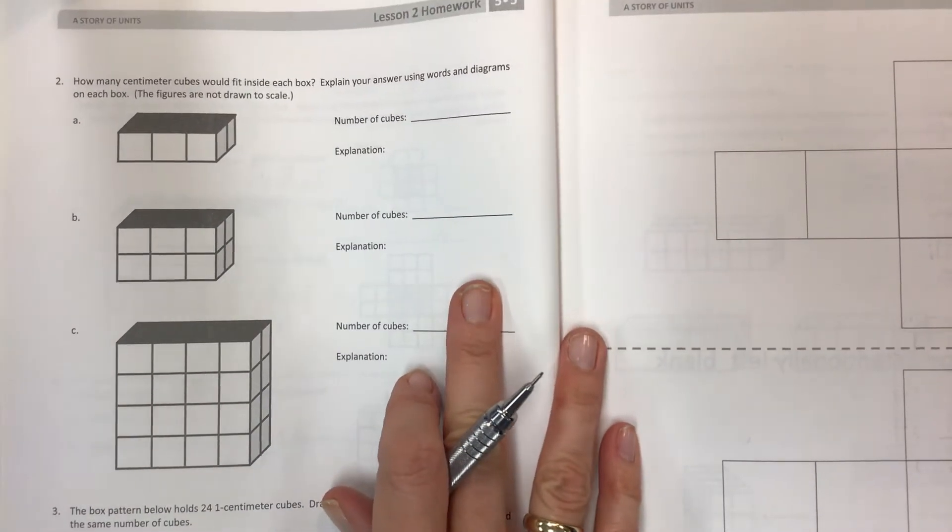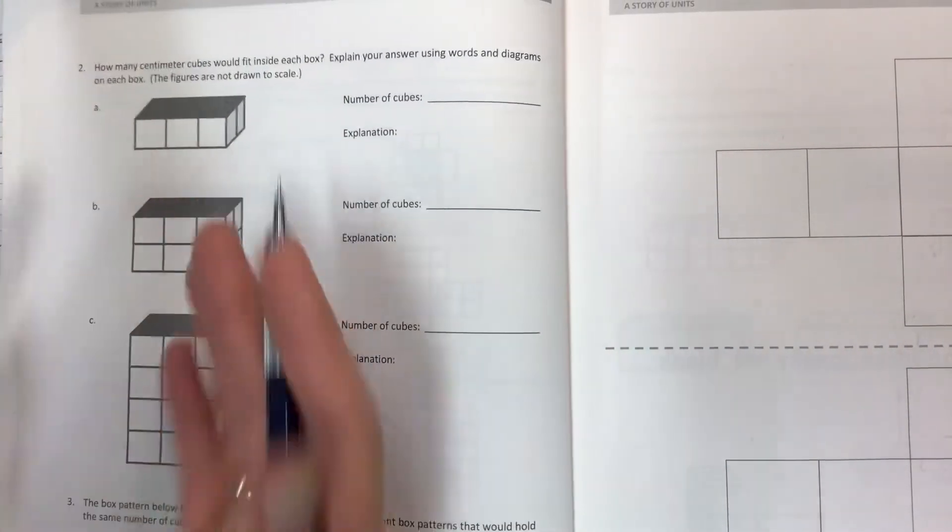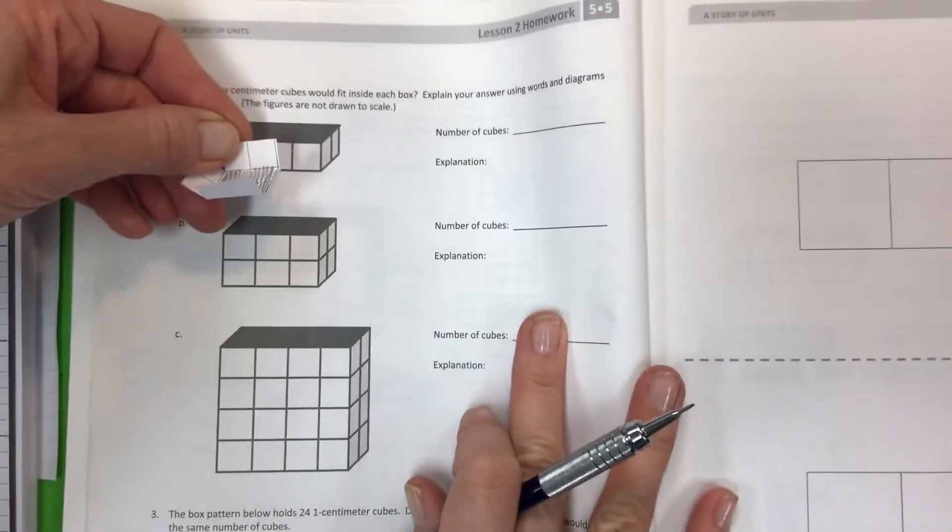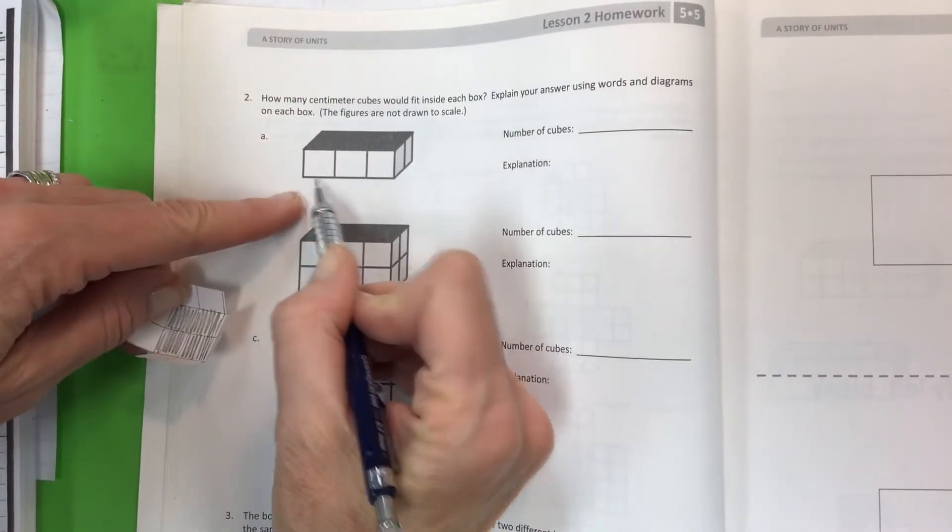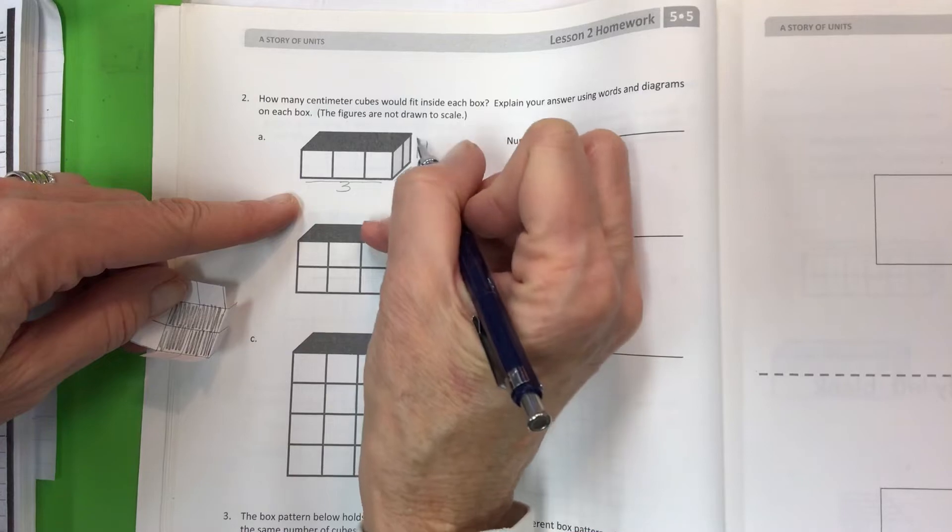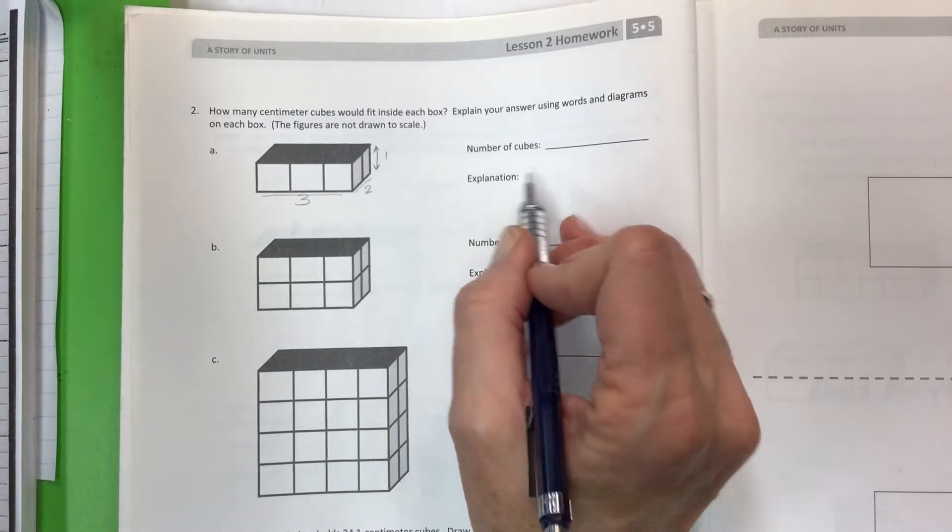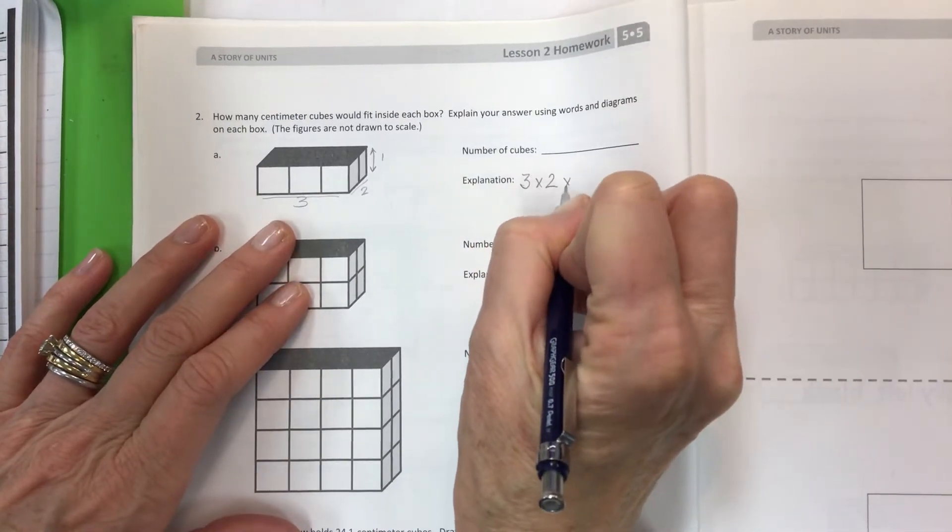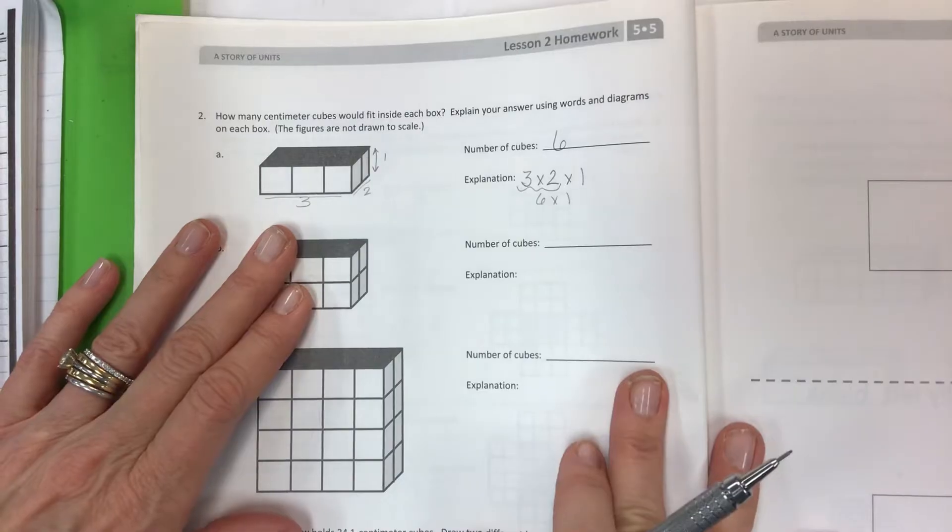How many centimeter cubes would fit inside each box? This is nice and easy—it's only one layer. When it's one layer tall, I have 3 across here and 2 here, and the height is 1. You can use your formula as your explanation, so it can be a 3 by 2 by 1. Here's your 6 times 1—6 cubes.